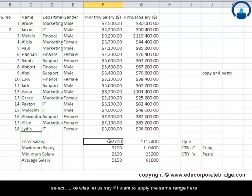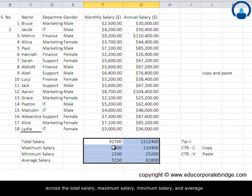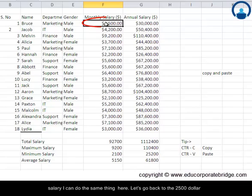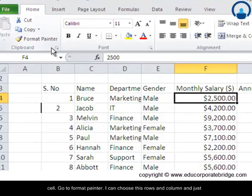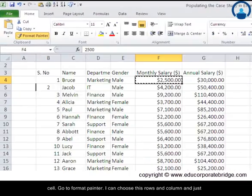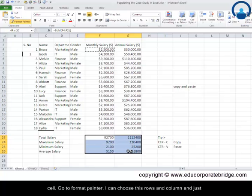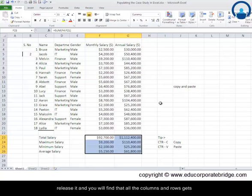Likewise, let's say if I want to apply the same range here across the total salaries, maximum salaries, minimum salaries, and average salaries, I can do the same thing here. Let's go back to $2,500 cell, go to Format Painter, I can choose these rows and columns and just release it. And you will find that all the columns and the rows get converted into the formats which you really want. So as we have seen, this is a kind of a number format which we have used.